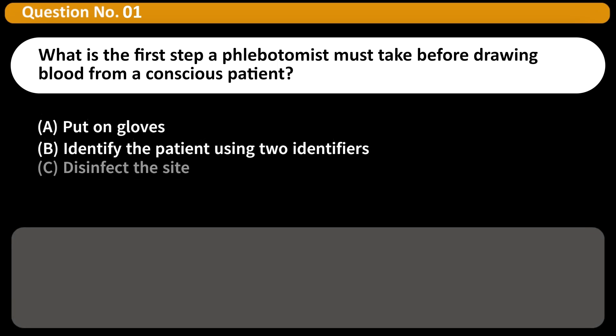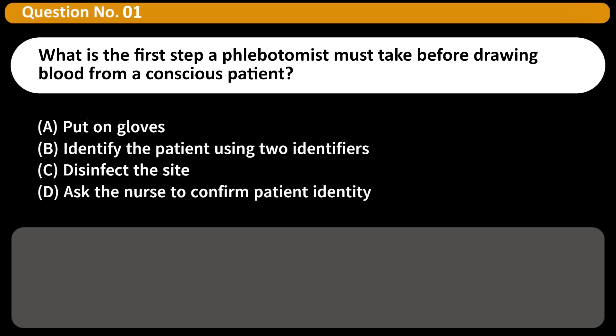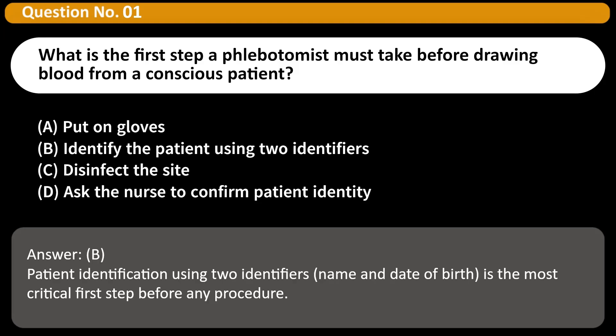What is the first step a phlebotomist must take before drawing blood from a conscious patient? A. Put on gloves. B. Identify the patient using two identifiers. C. Disinfect the site. D. Ask the nurse to confirm patient identity. Answer: B. Patient identification using two identifiers, name and date of birth, is the most critical first step before any procedure.